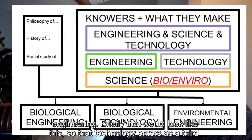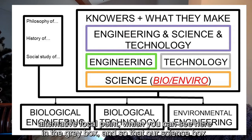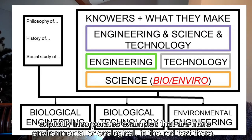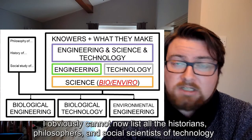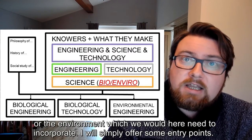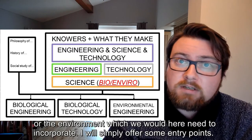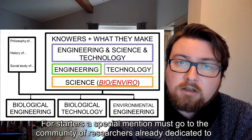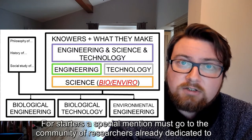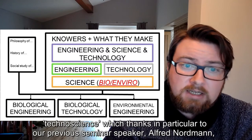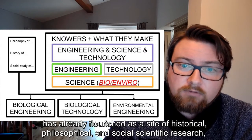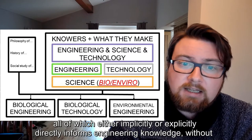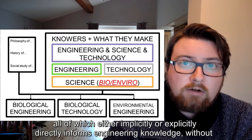Briefly, that would look like this: technology enters as a third alternative focal point in a grey box, and our science box explicitly incorporates examples that are more environmental or ecological. I obviously cannot now list all the historians, philosophers, and social scientists of technology or the environment which we would need to incorporate, so I will simply offer some entry points. A special mention must go to the community of researchers already dedicated to technoscience, which — tipping a hat in particular to our previous seminar speaker Alfred Nordmann — has already flourished as a site of historical, philosophical, and social scientific research, all of which either implicitly or explicitly directly informs engineering knowledge without covering it as a synonym.